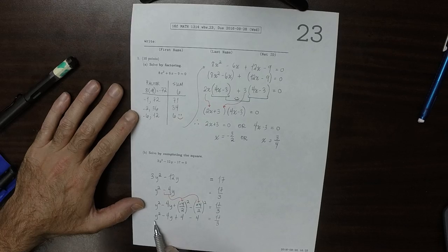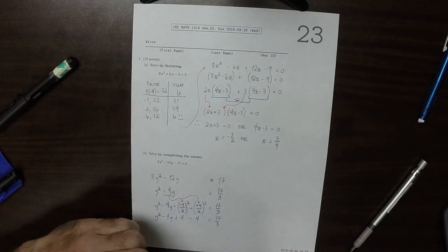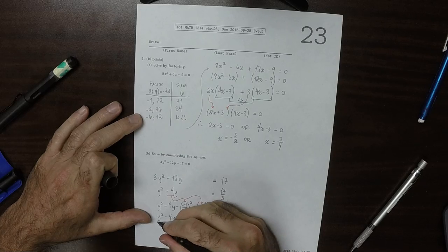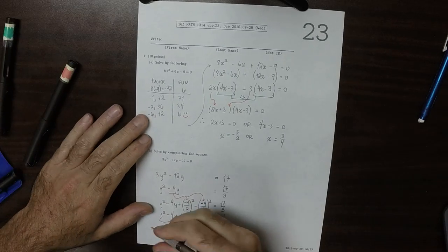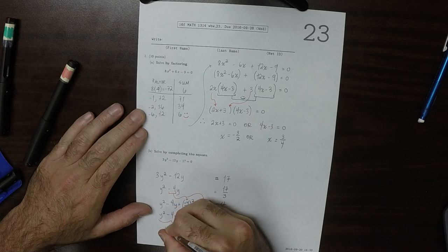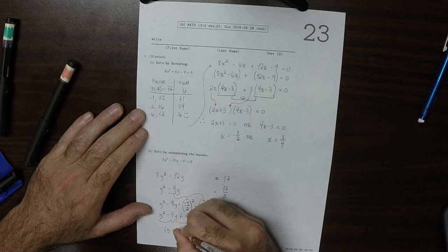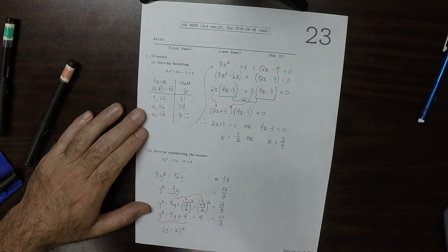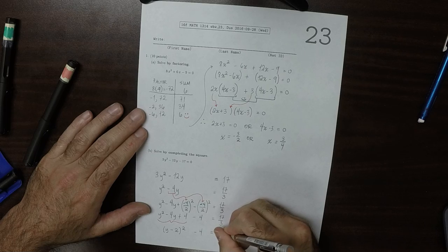The reason why that's expedient is because now notice that these first three terms factor into a perfect square. So, y minus 2 squared, and then minus 4 is 17 over 3.